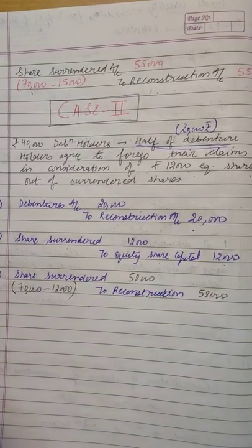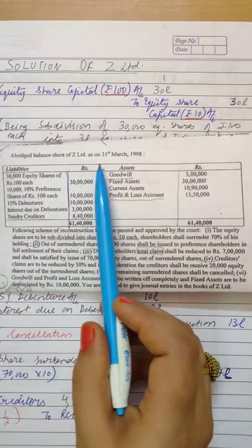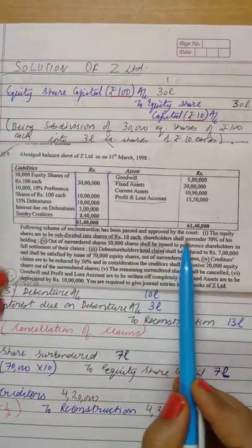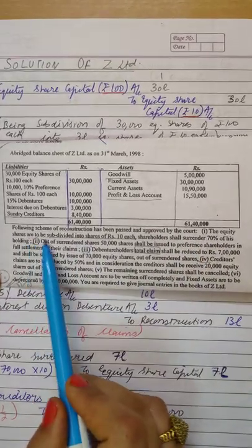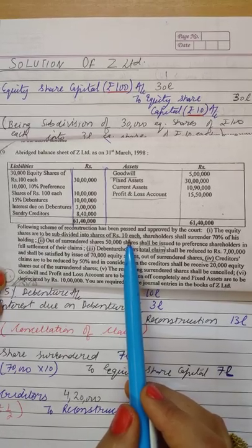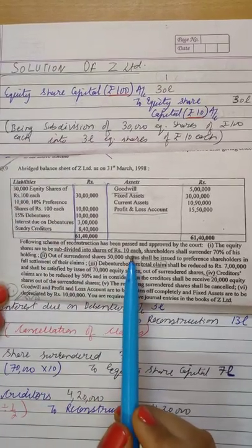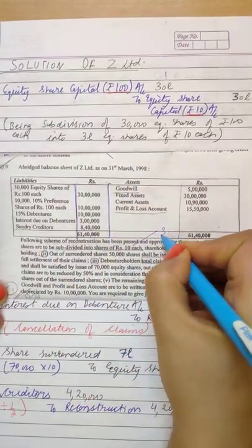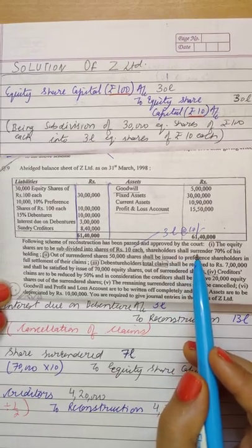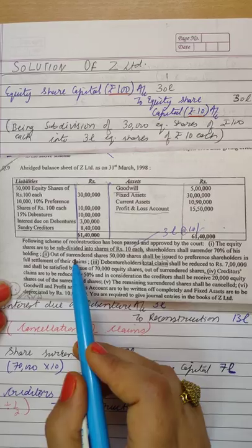Now let us take a question regarding the concept of share surrender and internal reconstruction. A balance sheet of Z Limited is given. Following is the scheme of reconstruction which has been passed and approved by the court. First point: the equity shares are to be subdivided into shares of Rs.10 each. As seen in the balance sheet, there are shares of Rs.100 each totalling Rs.30,000 — we divide these into Rs.10 shares, meaning the number of shares becomes 3 lakh shares of Rs.10, while the total paid-up amount remains the same. Next point: shareholders surrender 70% — that is 70% of Rs.30 lakh = Rs.21 lakh — to the Share Surrender Account.